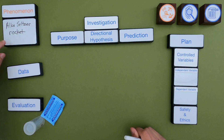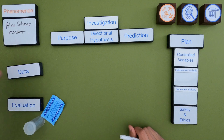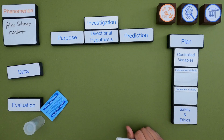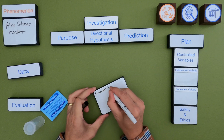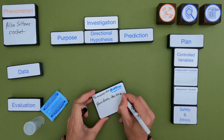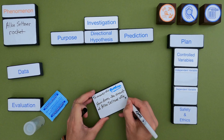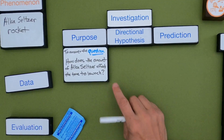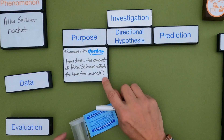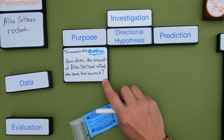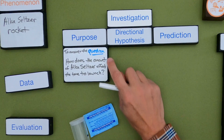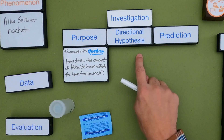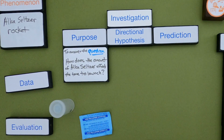So the phenomena I'm investigating are these Alka-Seltzer rockets. The first thing I want to do is write down a purpose. What I noticed when doing this was that the time seemed to be just random, so I was interested in how much time it would take and then if I change the amount of Alka-Seltzer, how might that affect the time. Now let me write down a directional hypothesis and describe its elements.